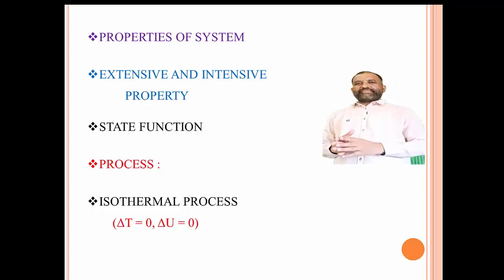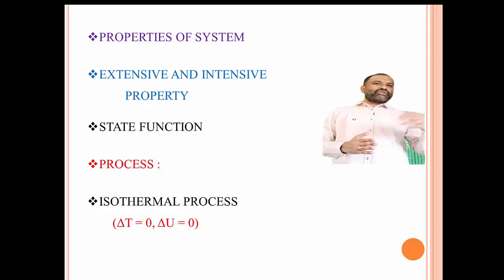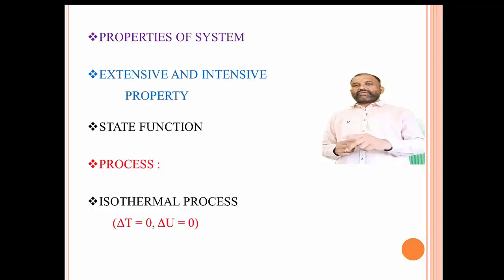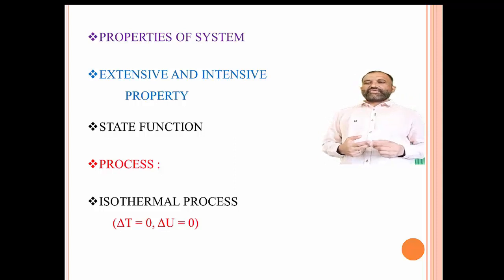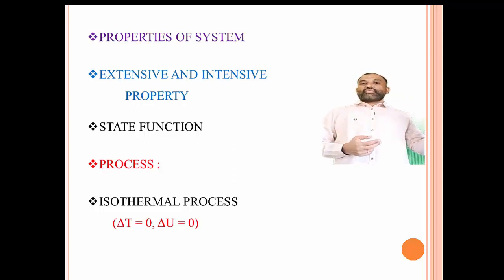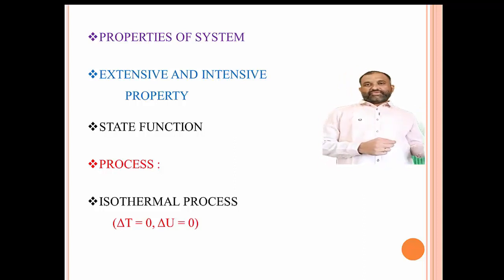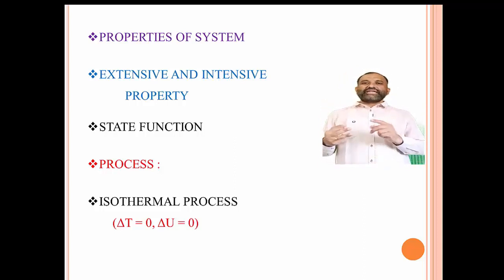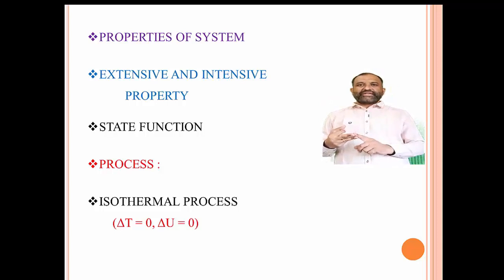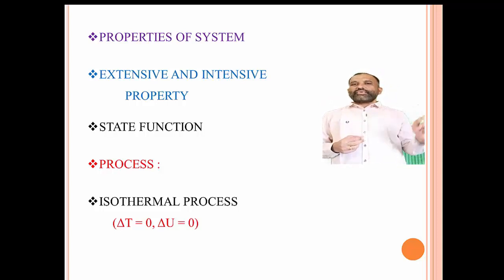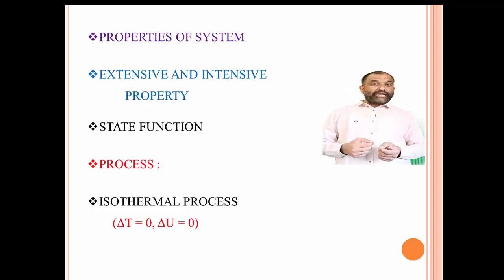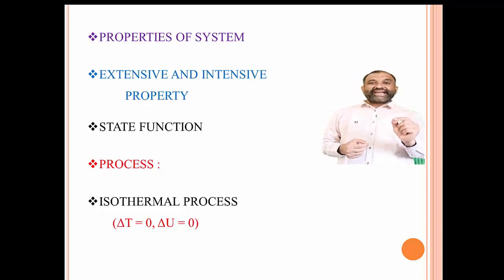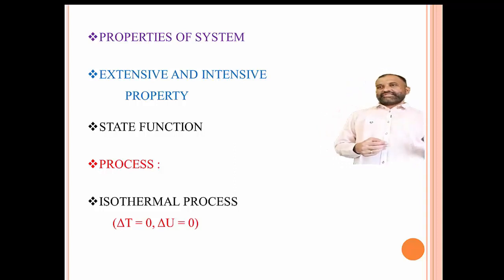This system can change from one state to another state — that is from pressure P1 to P2, volume V1 to V2, and temperature T1 to T2. The first is the initial state P1, V1, T1 and P2, V2, T2 are the final state of a system.